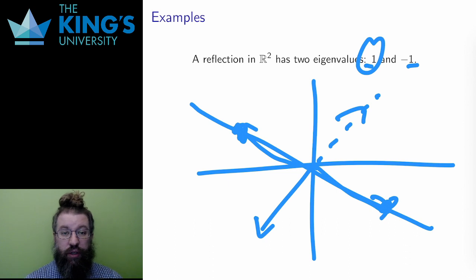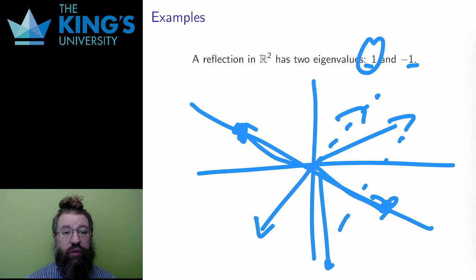Any other vector, something not on the line of reflection or perpendicular to it, gets reflected to some other new direction, not a multiple or a flip of itself.